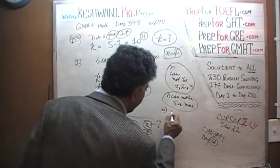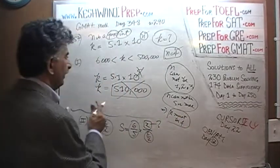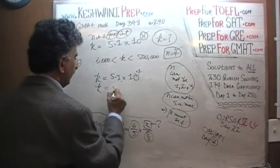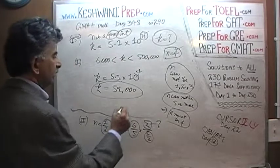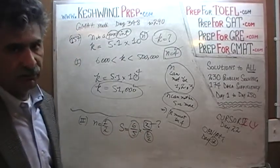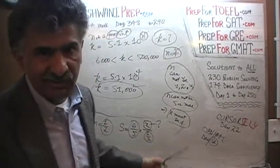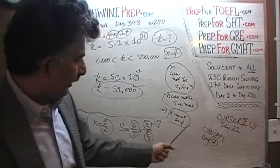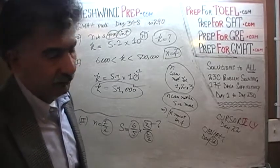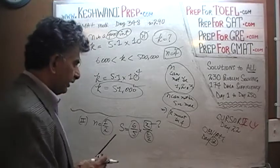Since n must be 4, k = 51,000. We can give a unique value for k. The first statement by itself does the job quite beautifully. Now that the first statement is sufficient, the answer cannot be B, C, or E — it would have to be either A or D. Let's look at the second statement.